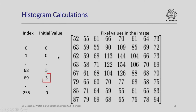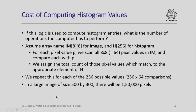I could do the same thing for the pixel value 69 — the count will be 3 because there are exactly 3 such pixel values. If I repeat this process for each pixel value from 0 to 255 I will have the entire count correctly calculated. However, one should be concerned about how much time it is going to take and how many computing operations we will have to perform. Assume that we have an array called IM 8 by 8 for an image and H 256 for the histogram. For each pixel value P we scan all 64 pixel values in IM and compare each with P, then assign the total count of matching pixel values to the appropriate element of H. We have to repeat this for each of the 256 possible values.